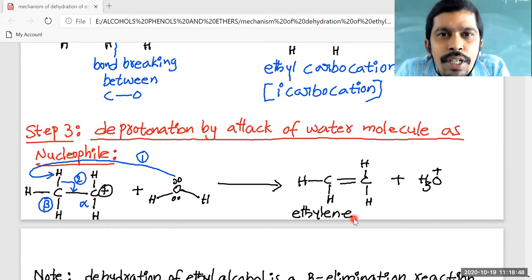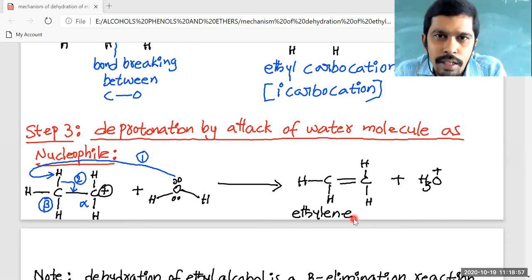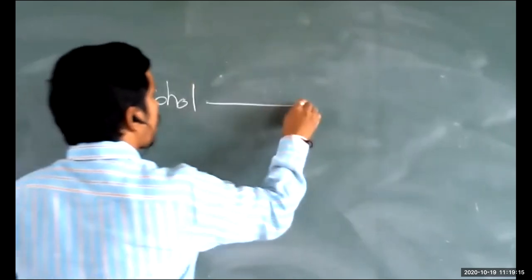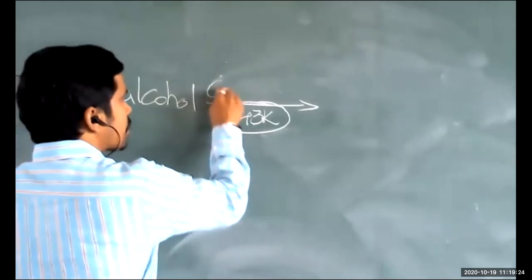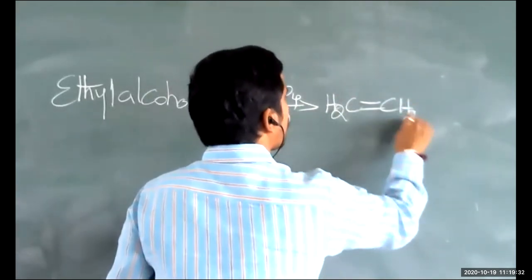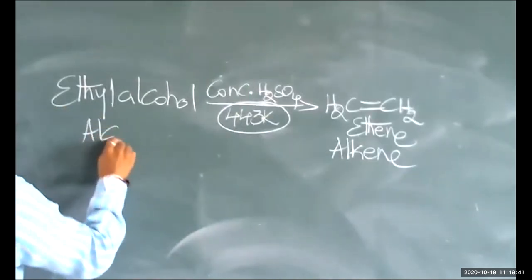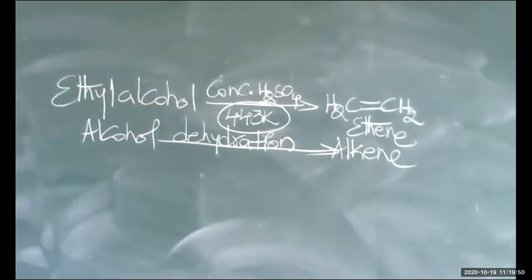If we take propyl alcohol undergoing dehydration — ethyl alcohol undergoes dehydration by heating at 443 Kelvin in the presence of concentrated H₂SO₄, and the product is CH₂=CH₂ (ethylene, IUPAC name). Ethylene is an example of an alkene; C₂H₅OH is an example of an alcohol. Whenever alcohols undergo dehydration, the corresponding products are alkenes.